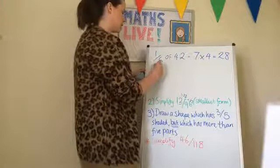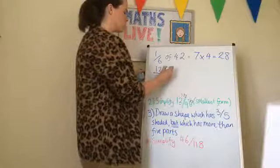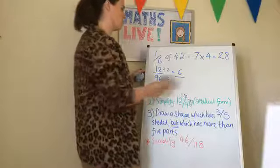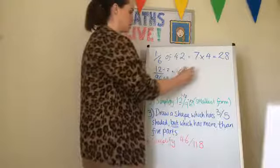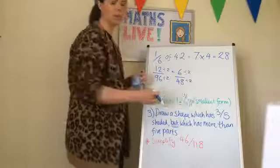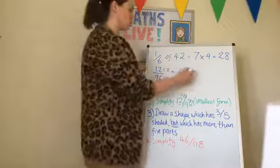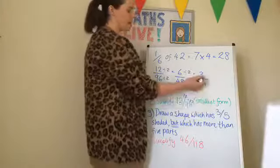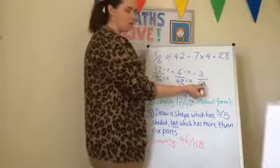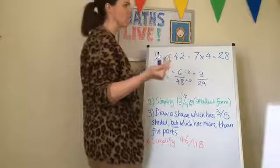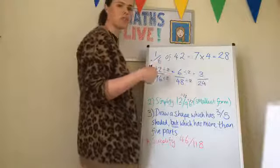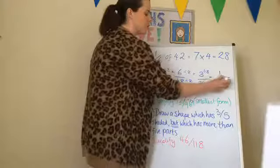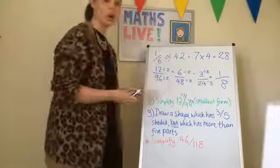What you could also do is think: 12 over 96 — they're both even numbers, so divide them by two, that makes six over 48. You could divide it by two again, that gives three over 24. Then think: is 24 in the three times table? Eight threes are 24. So if I divide that by three, it's one over eight — the same answer we got when we divided by 12.